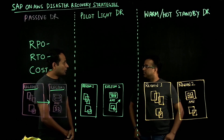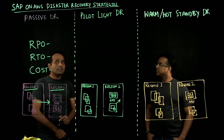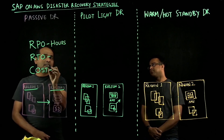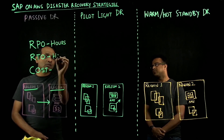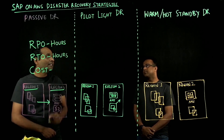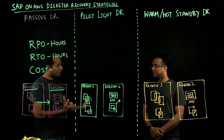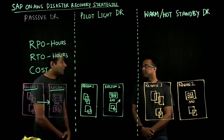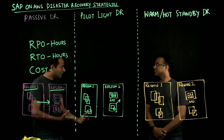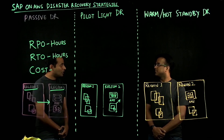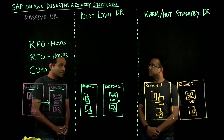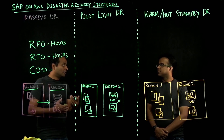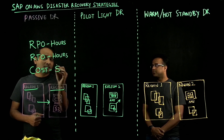Coming back to your recovery point objective, in this pattern your recovery point objective is going to be in hours, while your recovery time objective is also going to be in hours. The specific number will depend on the size of your workload, how frequently you are backing up, and how frequently you are taking your log backups. Your recovery time is also heavily dependent on whether you do this manually or use available automations. There are various automation tools available on AWS that you can use when launching these workloads.